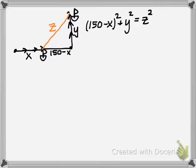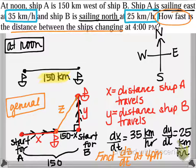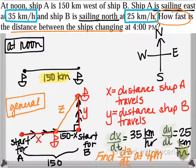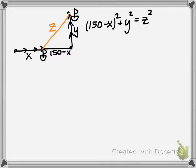It's a good idea to pause and decide whether to keep all three variables x, y, and z. Going back to the original setup, I have information about all three: I have dx/dt, dy/dt, and I'm looking for dz/dt. Therefore, I'm going to keep all three variables because I have two of the rates and I'm looking for the third rate. So we're ready to take the derivative with respect to time.